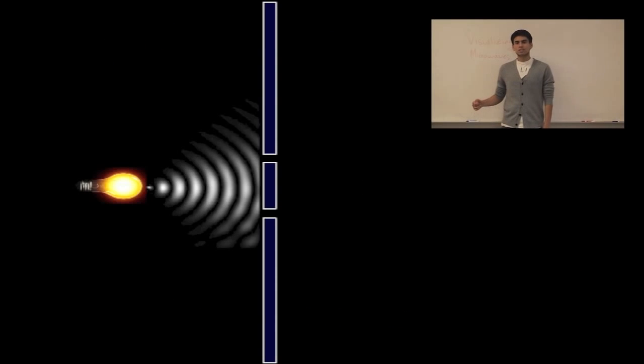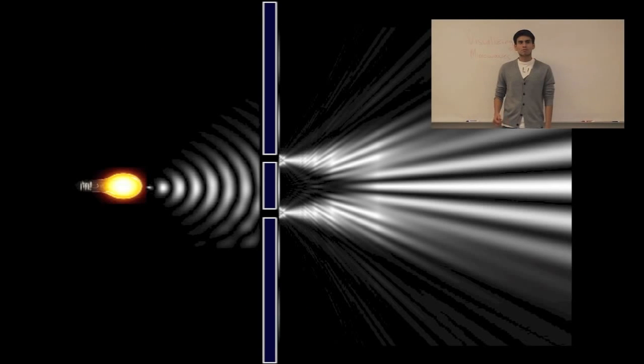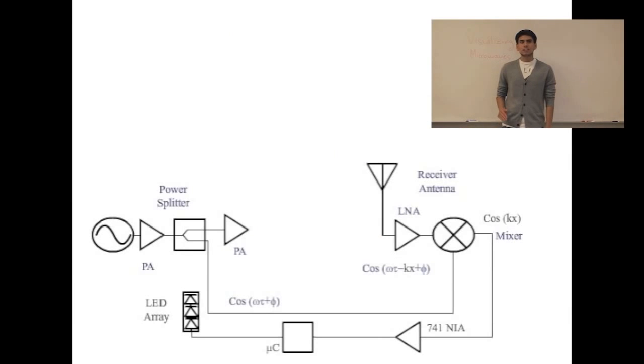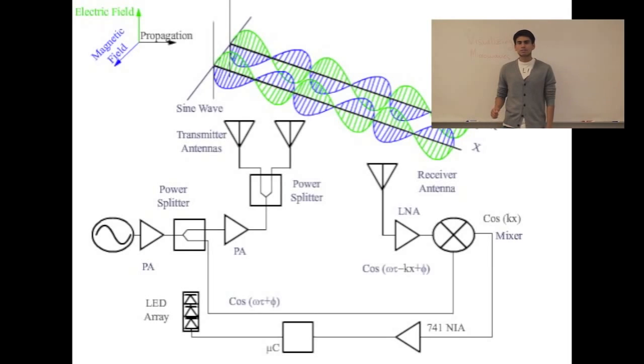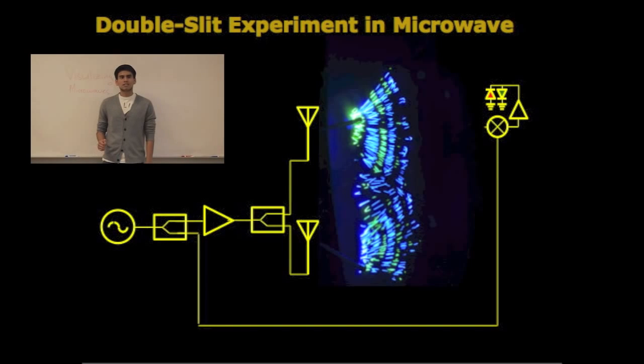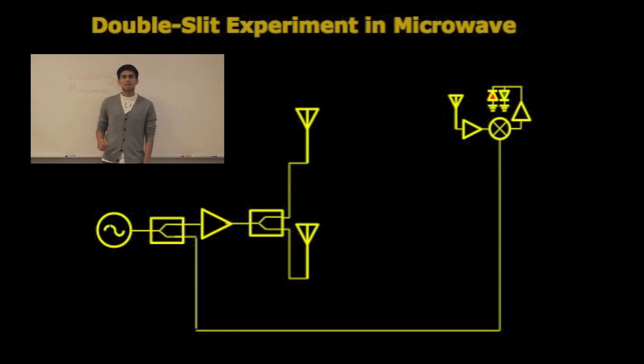Following in Thomas Young's footsteps, we can perform an interference experiment by using microwaves instead of visible light and two transmitters instead of slits. By adding a splitter to our schematic, we can transmit through two antennas instead of just one. With the two transmitting antennas stationary, we can move the receiving antenna around and paint the waves in a manner similar to the previous experiment.